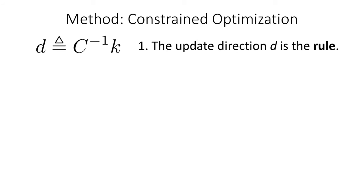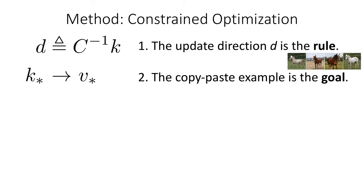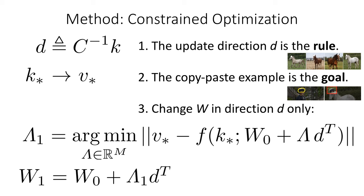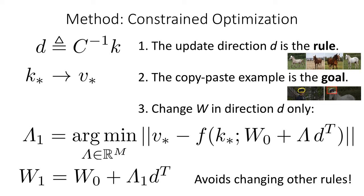So here's our method. First, we calculate the ideal update direction d, which depends on the key that we want to change, and not the value. This is done in the UI by the rule selector. Second, we ask the user to give a copy-paste example to set a key-value pair as the goal. Finally, we calculate an update that optimizes the goal while remaining constrained to the update direction d. This simple method allows a rule to be completely changed while still avoiding changes in unrelated rules in the model. It allows us to change one specific thing at a time, and it provides some insight into how rules are organized within a generative model.